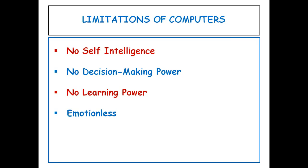Another topic is the limitations of a computer. Some limitations are: no self-intelligence, no decision-making power, no learning power, and emotionless. Today a computer is able to do work which is impossible for man, and computers are used to do risky and dangerous work where precision is needed, but a computer does not have any intelligence of its own — it works according to instructions only.